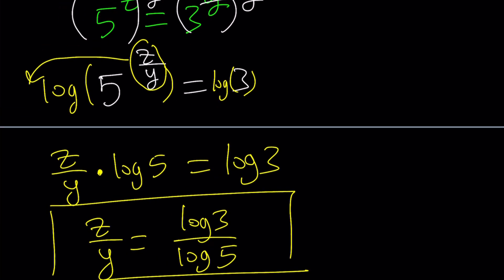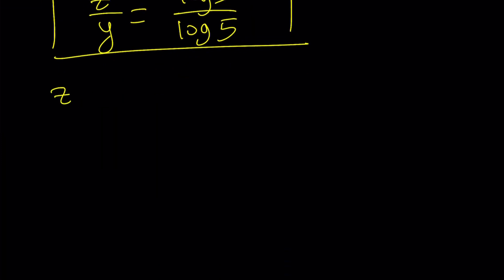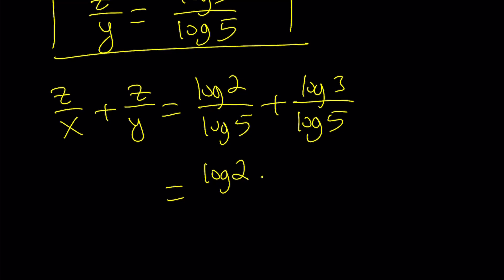So we got z/y and we got z/x. What do you think we're going to do next? Add them up. Because that's what we need. z/x + z/y = log 2/log 5 + log 3/log 5. Now notice that we have a common denominator. So you can just add the numerators. Log 2 + log 3 all over log 5.